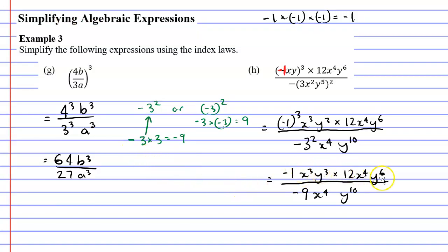Next I'd like to simplify the top of my fraction. I multiply the numbers: negative 1 times 12 gives me negative 12. Then I add up my indices: x to the power of 3 times x to the power of 4, we go 3 plus 4, giving x to the power of 7. And y to the power of 9 because 3 plus 6 is 9. For the denominator we have negative 9, x to the power of 4, and y to the power of 10.